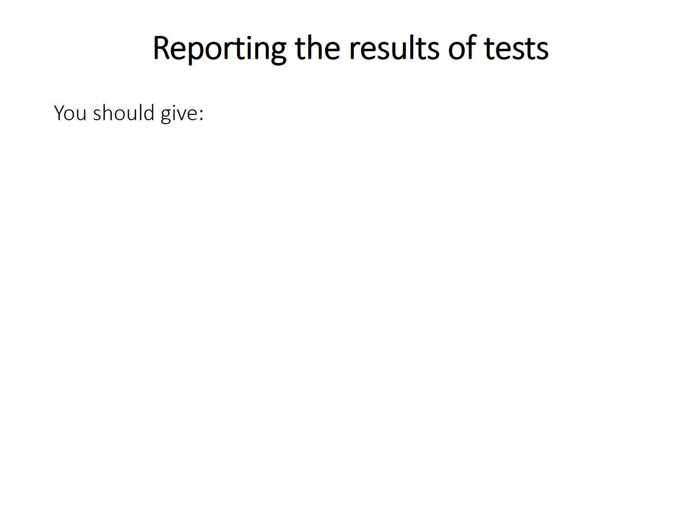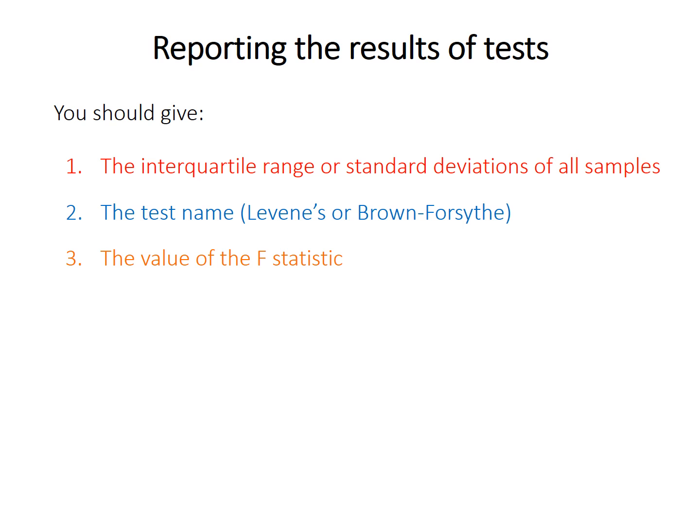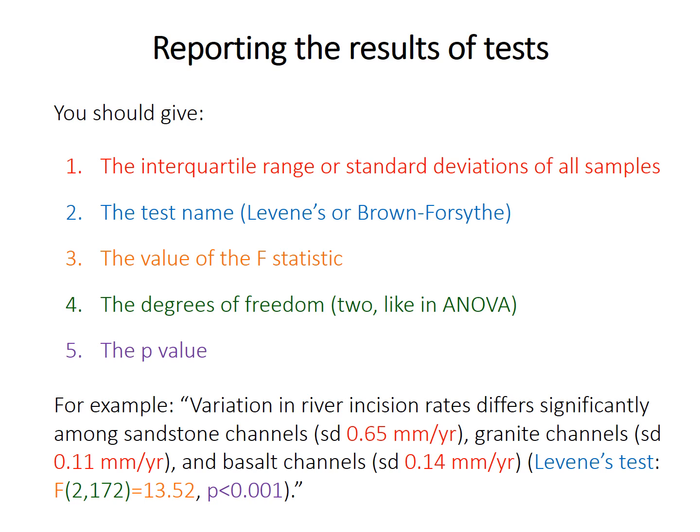Here's what you should report. If you're performing Levene's test, you can probably report standard deviations because the data is relatively symmetrical. But for skewed distributions with the Brown-Forsythe test, you should report the interquartile range — the range from the 25th percentile to the 75th percentile of the data, which you've seen in box and whisker plots. It's also important to give the test name and be clear whether you did Levene's test or the Brown-Forsythe test. Because both tests perform an ANOVA, you should give the F statistic, the two degrees of freedom, and the p-value.